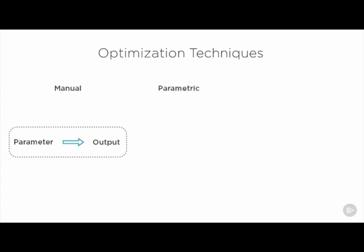The second one is called parametric optimization. It's basically an automation of the manual process, so instead of manually going in and checking each parameter and solving it, you can have a program that goes in and changes the model for you.